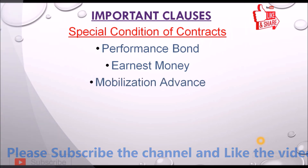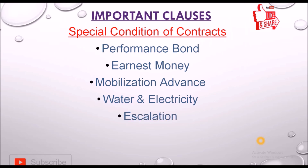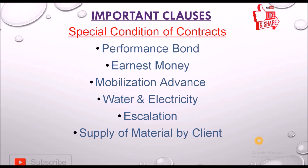Next is mobilization advance — an advance given to the contractor based on the value of the project. Next is water and electricity — whether the client will provide these free of cost or the contractor will arrange them. Next is escalation-free contract and supply of material by the client — what materials are supplied by the client and what wastage consideration is mentioned in this clause.